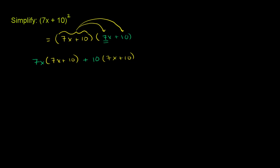And then you do the distributive property again. 7x times 7x is 49x². 7x times 10 is 70x, plus 70x. And then you have 10 times 7x is another 70x, and then 10 times 10 is 100.